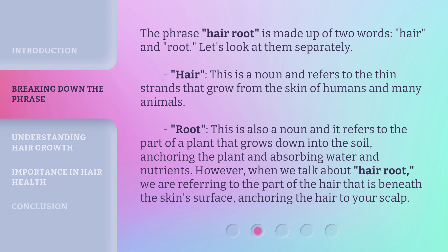The phrase 'hair root' is made up of two words: hair and root. Let's look at them separately. Hair — this is a noun and refers to the thin strands that grow from the skin of humans and many animals. Root — this is also a noun and it refers to the part of a plant that grows down into the soil, anchoring the plant and absorbing water and nutrients. However, when we talk about 'hair root,' we are referring to the part of the hair that is beneath the skin's surface, anchoring the hair to your scalp.